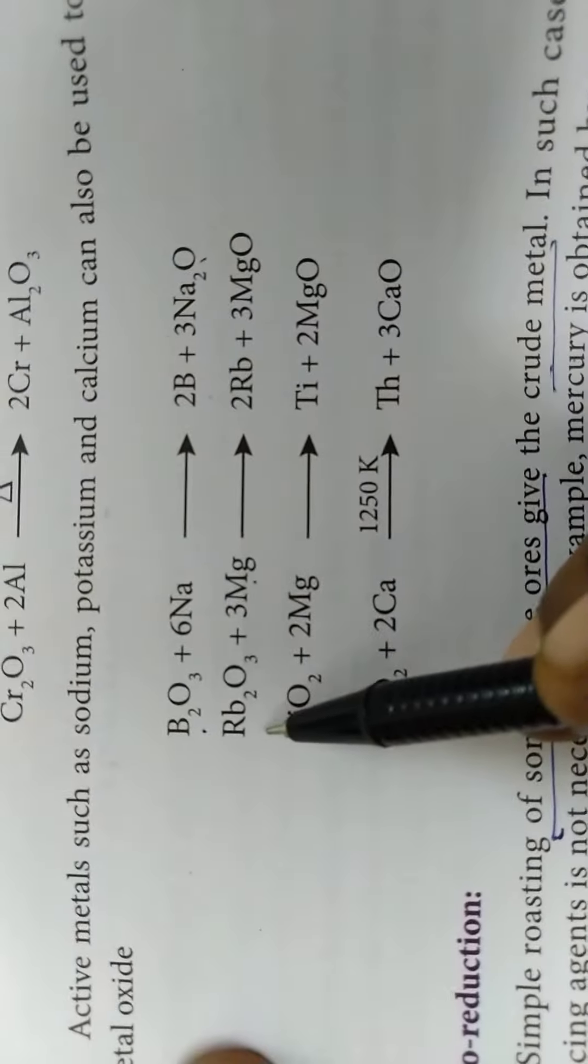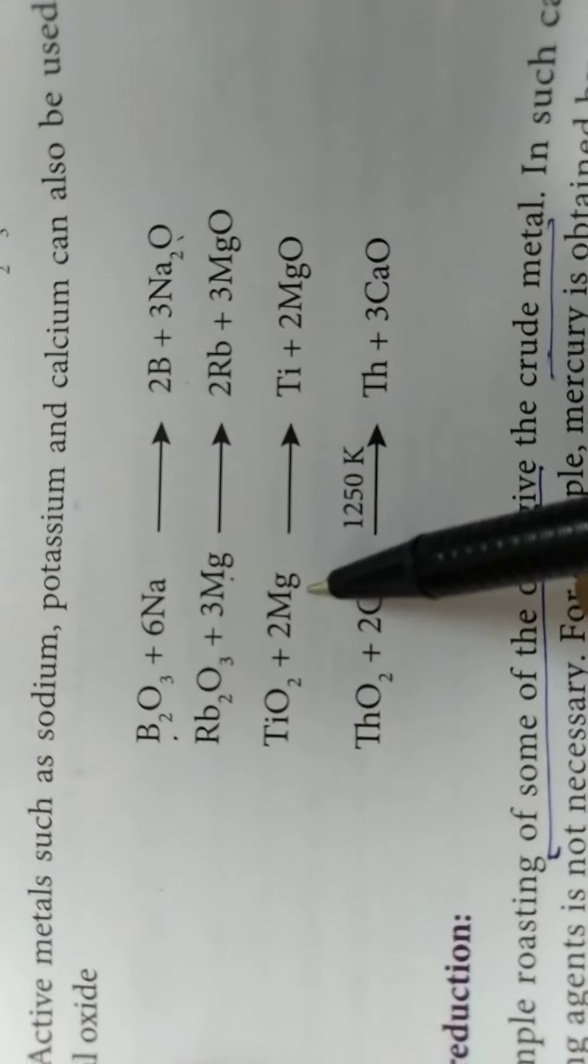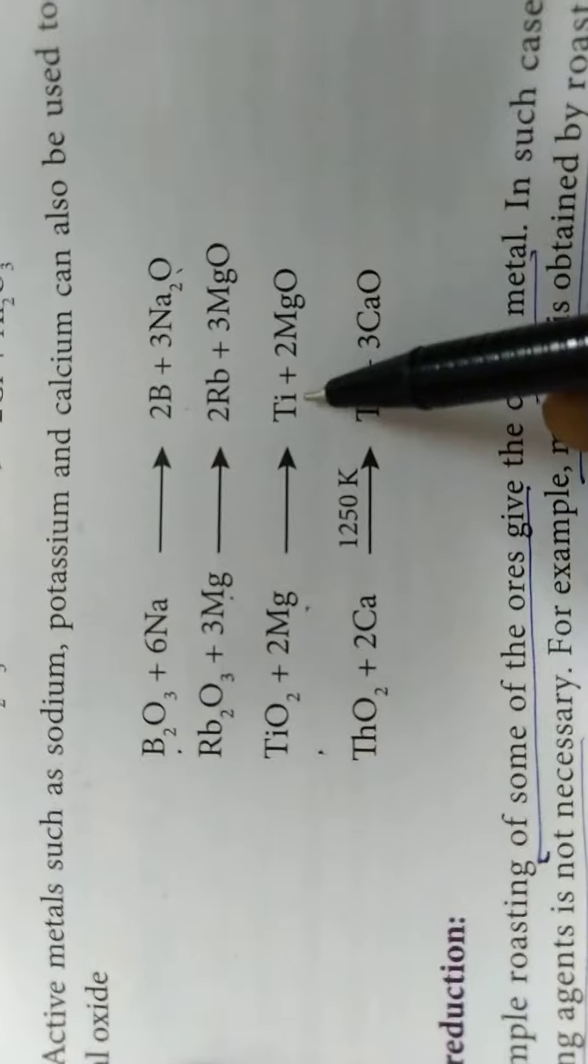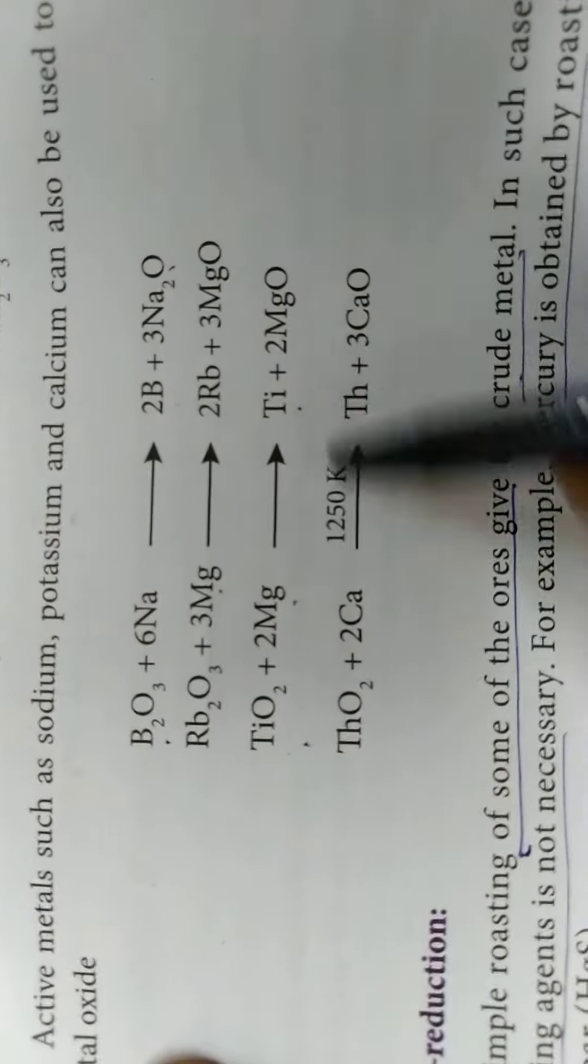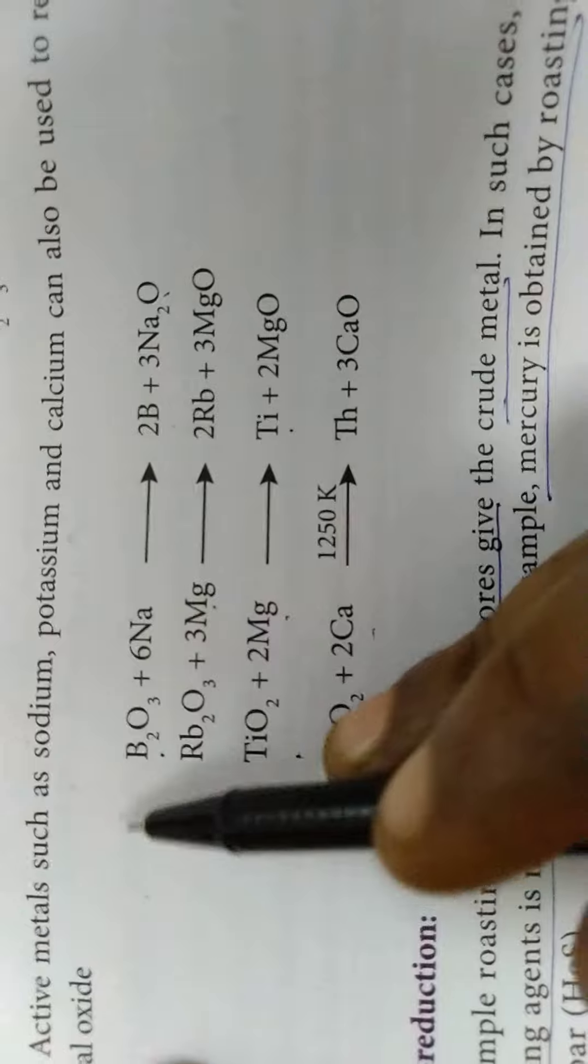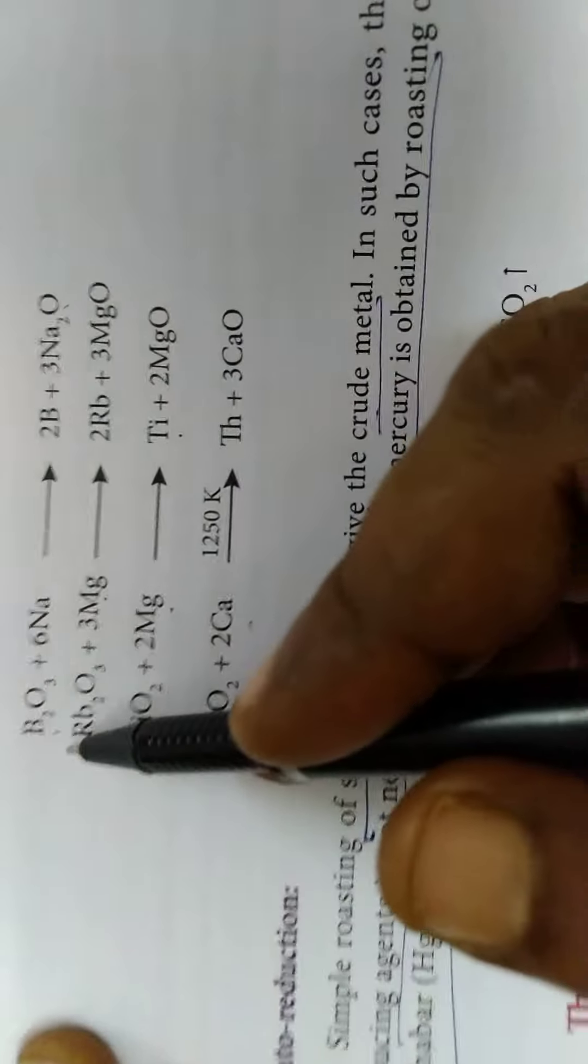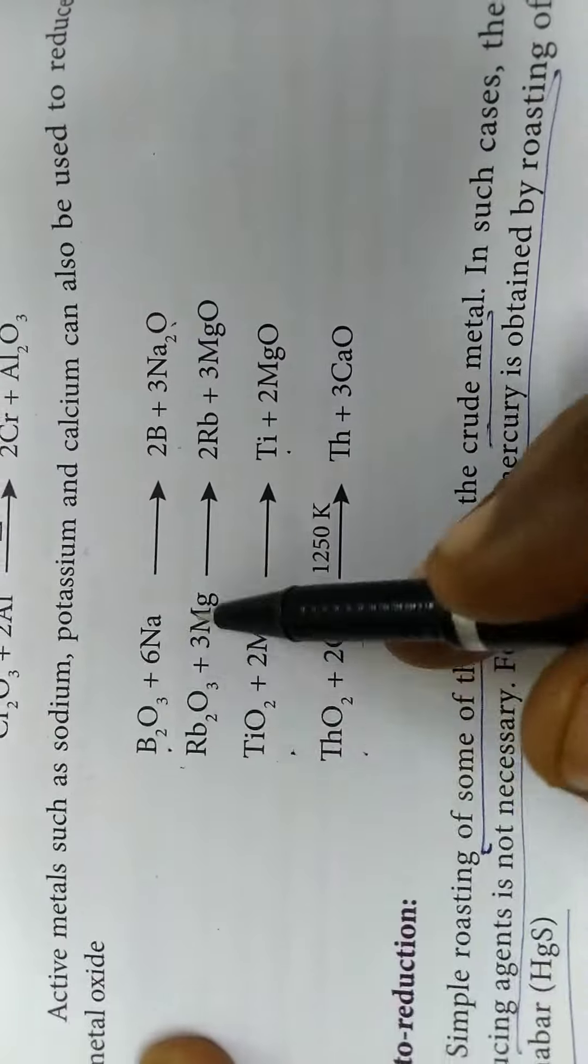Magnesium can be used for Rubidium Oxide, and Magnesium can also be used for Titanium Oxide TiO2 to be converted into Titanium. And Calcium for Thorium Oxide. So which metals can be used for which metal oxide, you have to remember it.